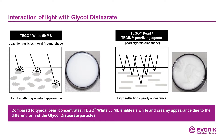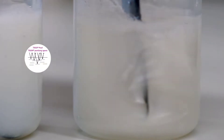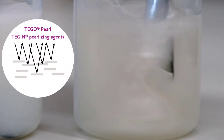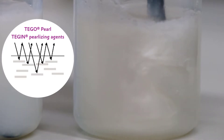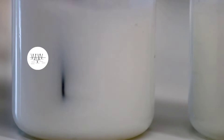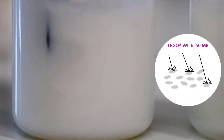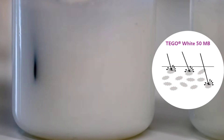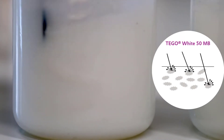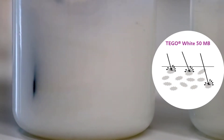On the right side, in our Tego Pearl product, the particles are flat, so the light is reflected and you will get a pearly appearance. On the left side, in our Tego White product, the particles are round, so the light is scattered and you will get a turbid appearance.